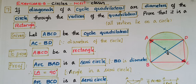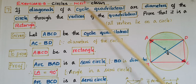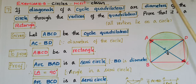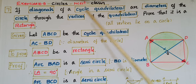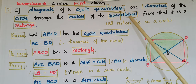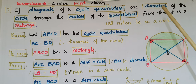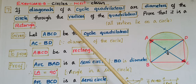Hello everyone, today I am going to tell the solution of the 7th problem from Exercise 10.5 from the Circles chapter from NCERT Class 9. In this problem, if the diagonals of a cyclic quadrilateral are diameters of the circle through the vertices of the quadrilateral, prove that it is a rectangle.